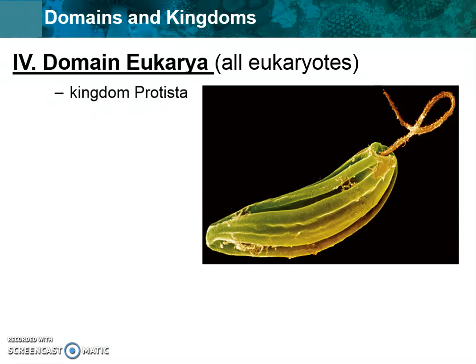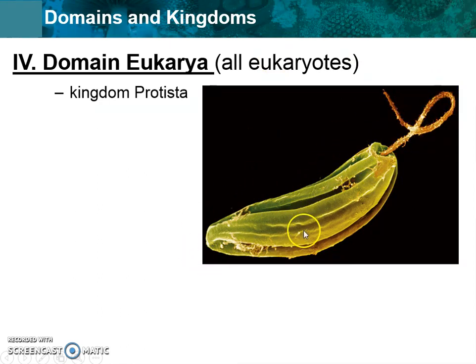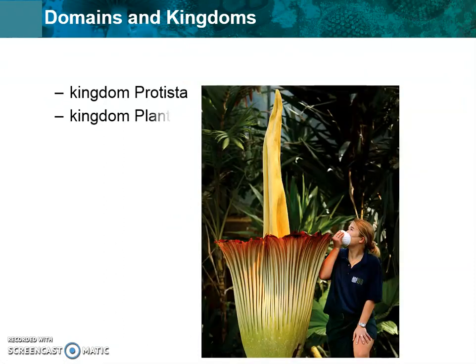The first kingdom is protists. Protists are weird because we don't know a lot about them so far through biology. This protist is seen under a microscope — it has a whip-like tail we know as a flagella and it's single celled. But because it's a eukaryote, we know it must have a nucleus. We'll learn more about protists later.